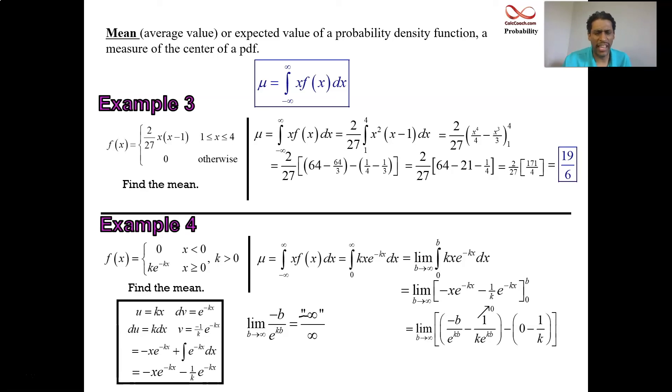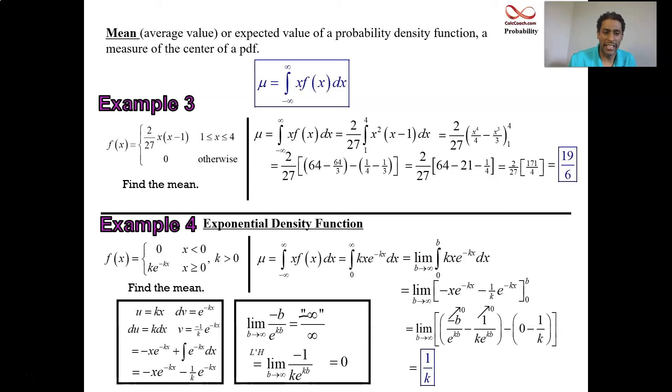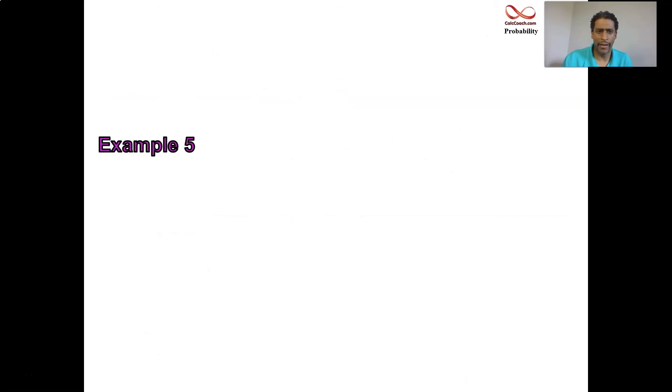So we execute L'Hopital's rule where we take the derivative of the numerator and divide it by the derivative of the denominator. And so numerator's derivative with respect to b is negative one. Denominator's derivative with respect to b is k e to the kb. And then just like the other fraction there, this guy is definitely going to go to zero. So those guys both go to zero. And then what happens? There's a minus, a minus one over k. So it's one over k. What did we learn from this? For an exponential density function, the mean is one over k. They're related to each other. If you know the mean, you know the k. Let's go through one more example.